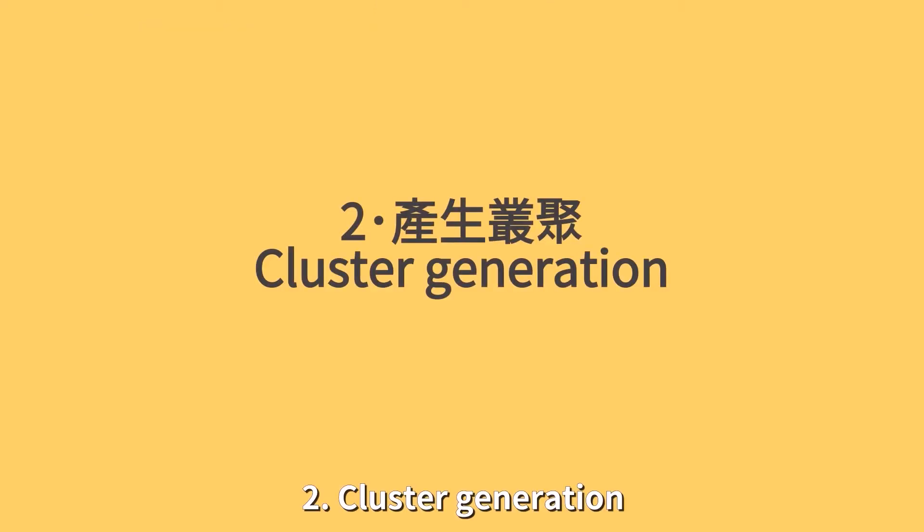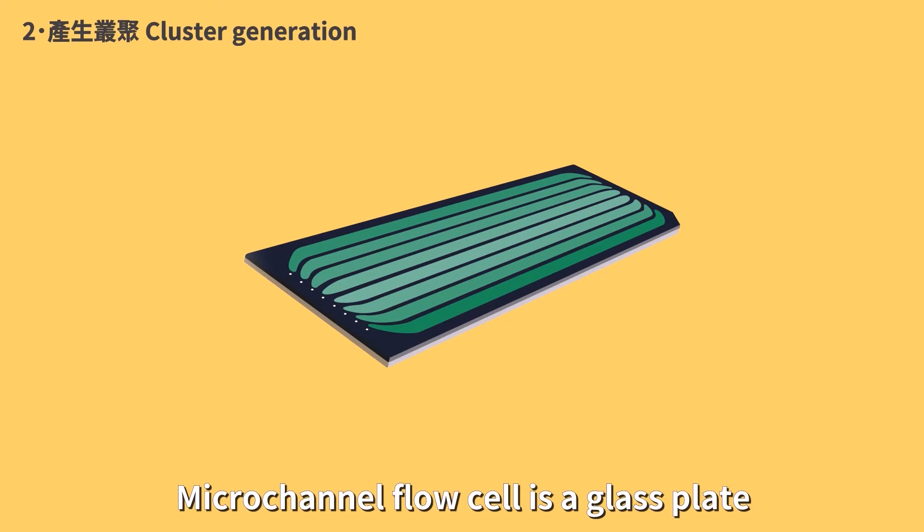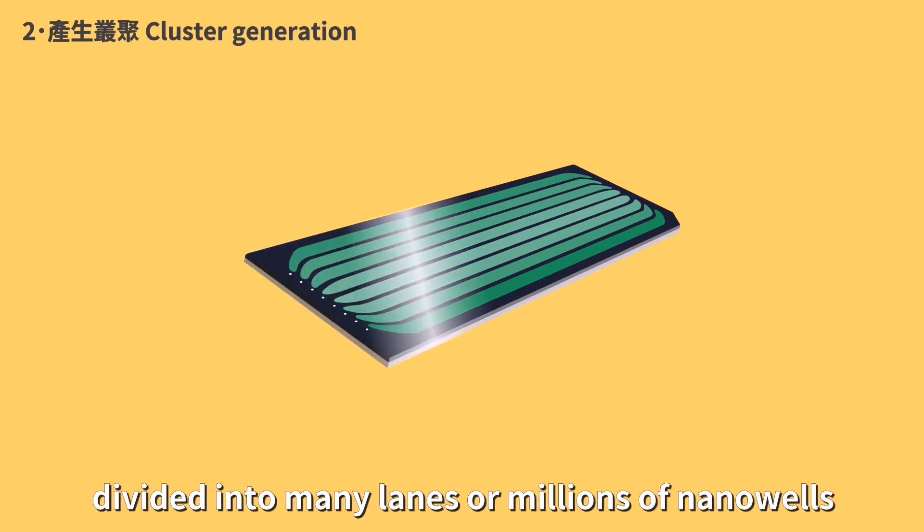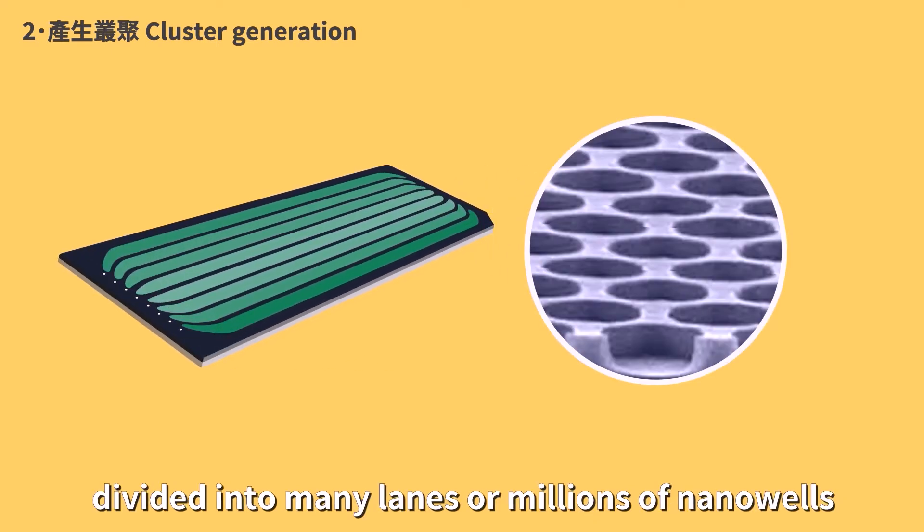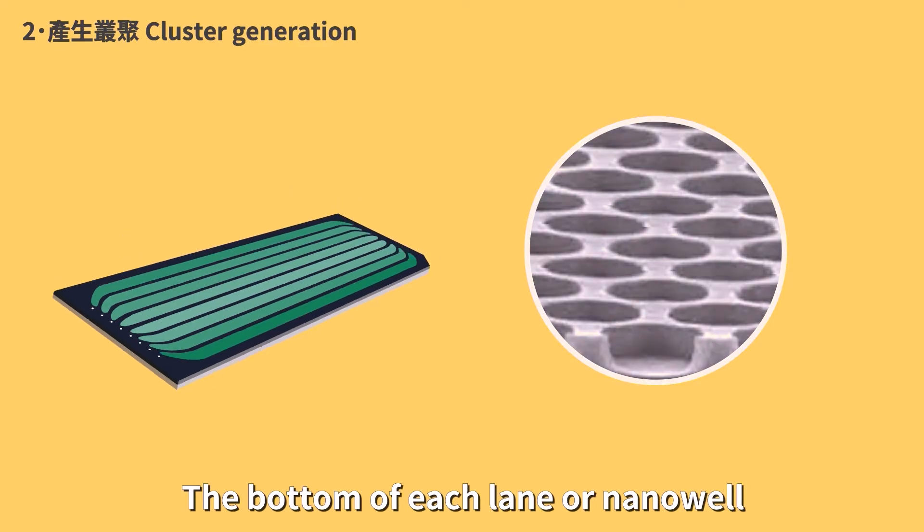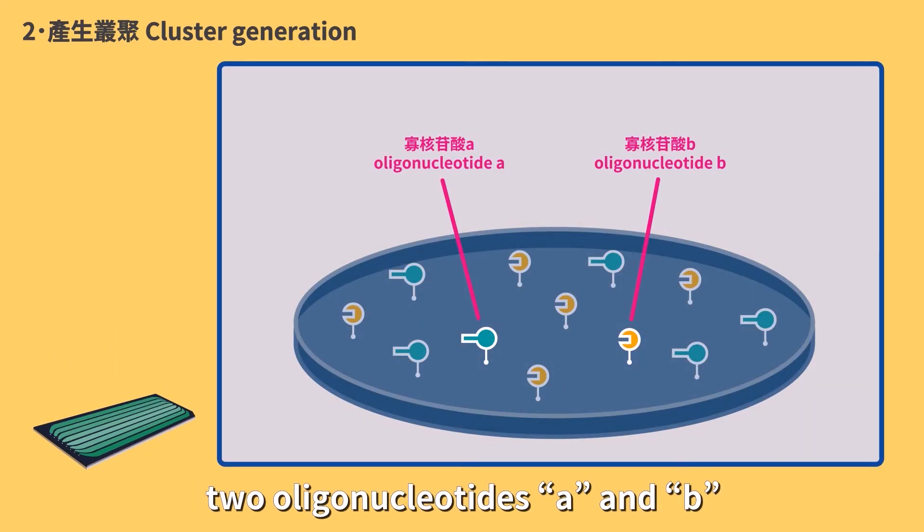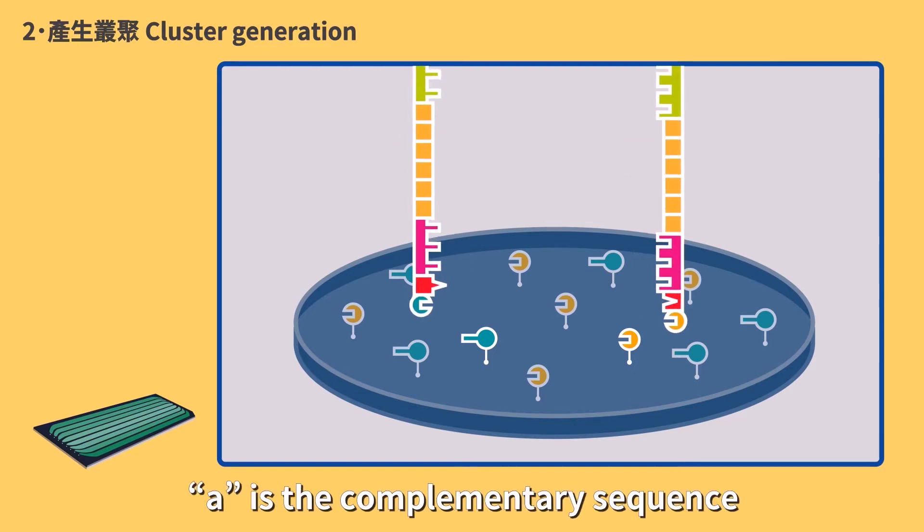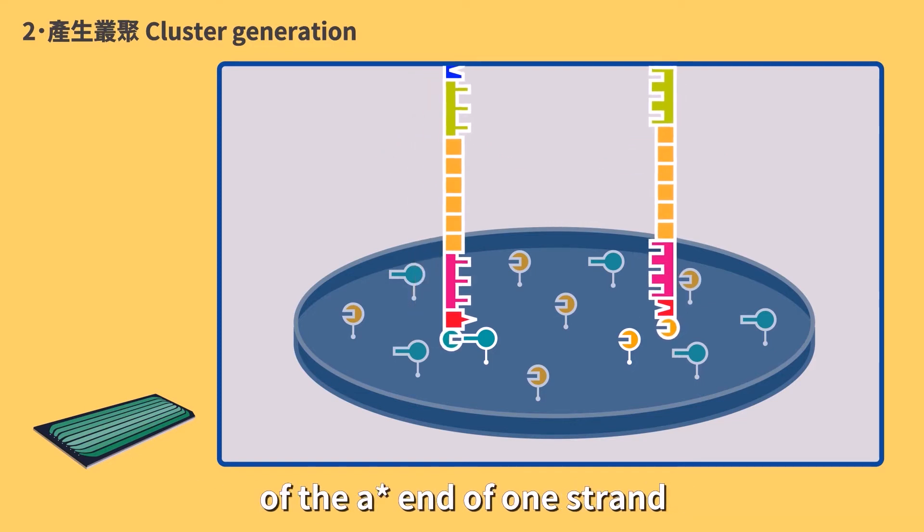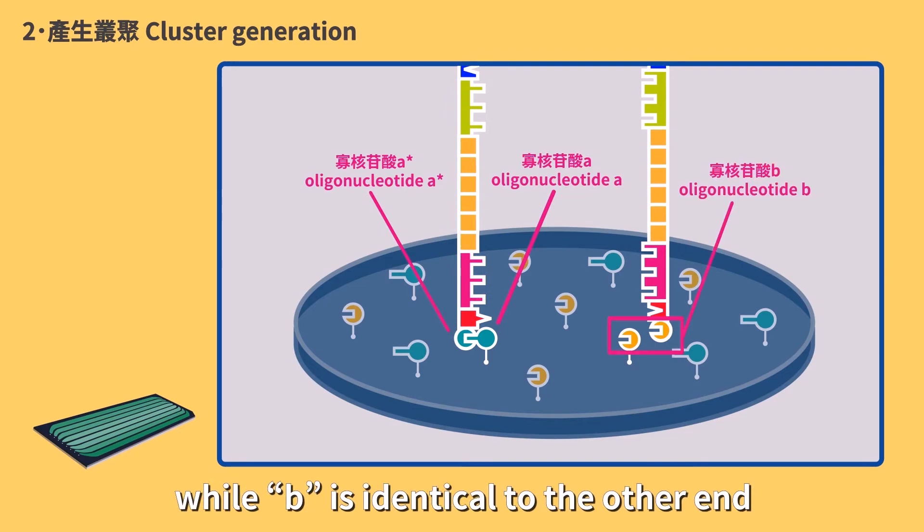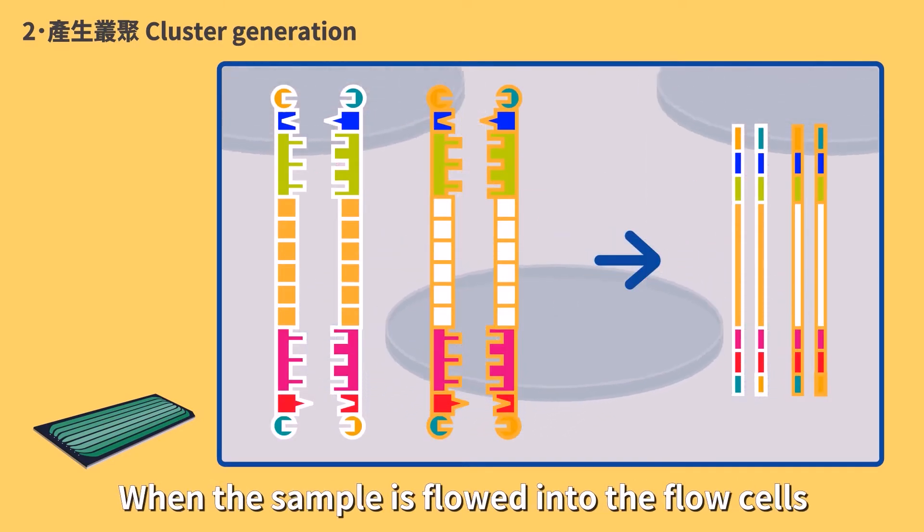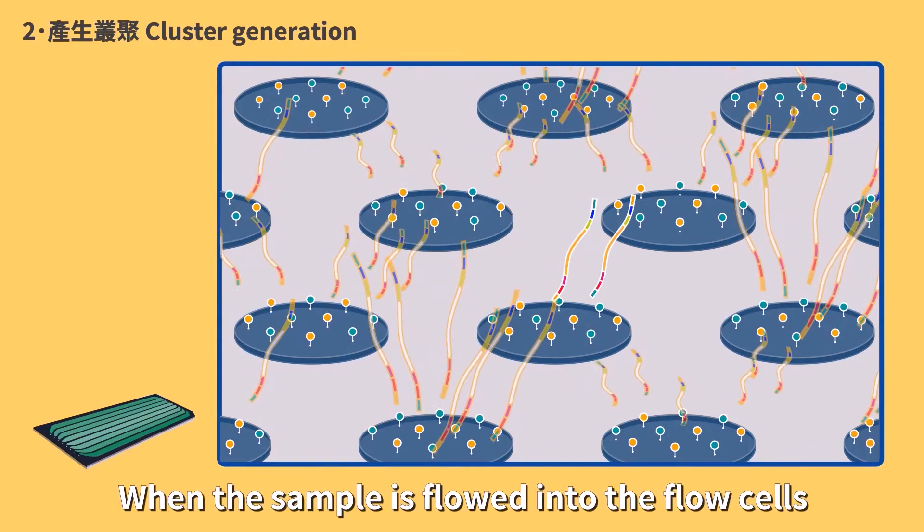Cluster generation. Microchannel flow cell is a glass plate divided into many lanes or millions of nanowells. The bottom of each lane or nanowell is evenly coated with two oligonucleotides, A and B. A is the complementary sequence of the A star end of one strand, while B is identical to the other end.